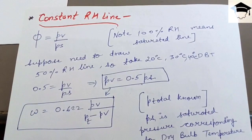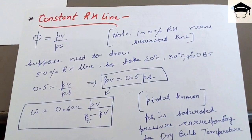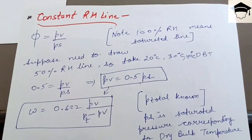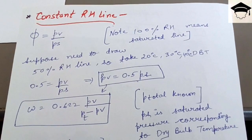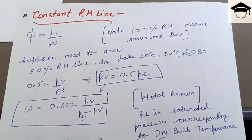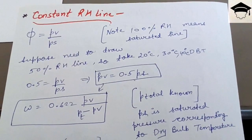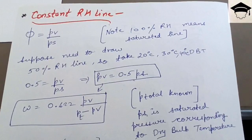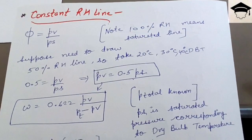Take arbitrarily chosen dry bulb temperatures — for example, 20°C, 30°C, and 40°C. Take them at equal intervals, such as 20, 30, 40 or 20, 25, 30, and so on.